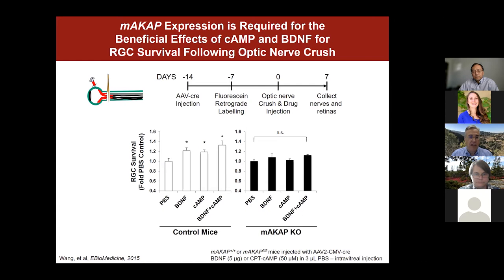The most interesting outcome was not that the MAKA-cap knockout had worse survival, but that it had no neuroprotective effects from exogenous BDNF and cyclic AMP. Normally, intravitreal injection of neurotrophic factor or cyclic AMP confers a very consistent increase in retinal ganglion cell survival after nerve crush. In the absence of this scaffold, we saw no such protection — placing the MAKA-cap scaffold right in the middle of the network for these two key neuroprotective signaling pathways.